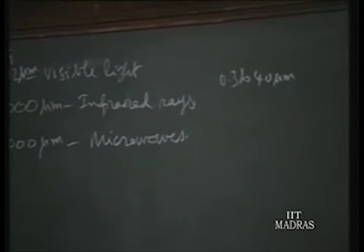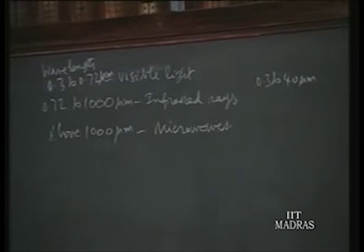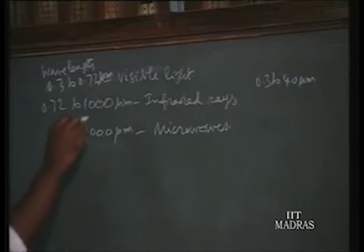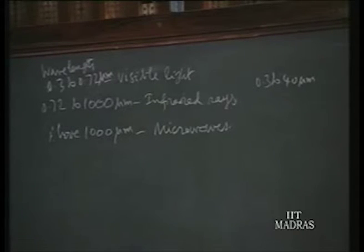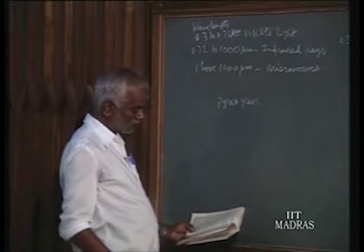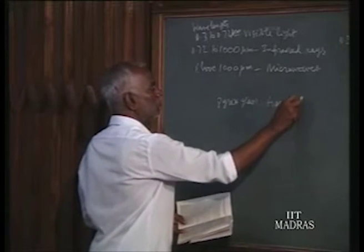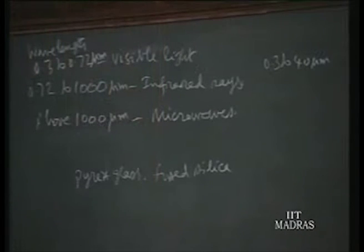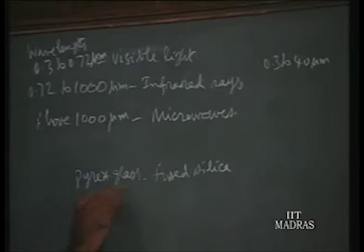The radiation thermometers use the wavelength range of 0.3 to 40 microns, containing both visible and infrared regions. Ordinary glass, used for visible light, is opaque for infrared rays. Hence the lenses for these radiometers are made up of Pyrex glass, fused silica, and calcium fluoride — special glasses that can transmit infrared rays. Above 1000 micron wavelength, the electromagnetic waves are microwaves.